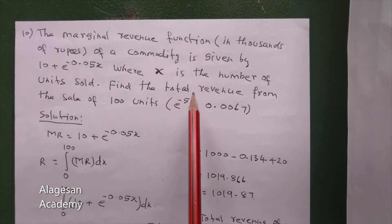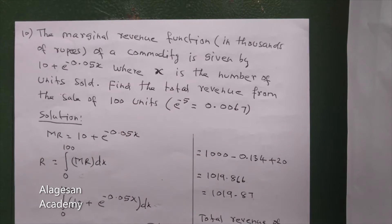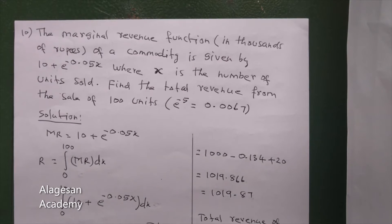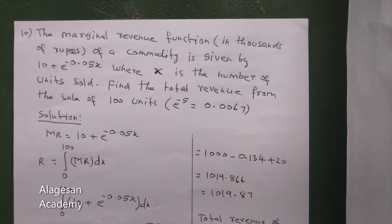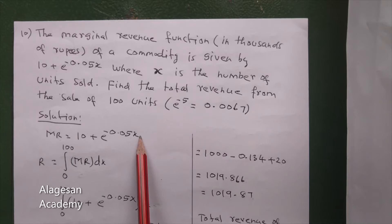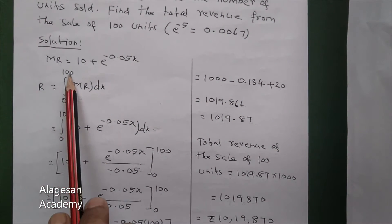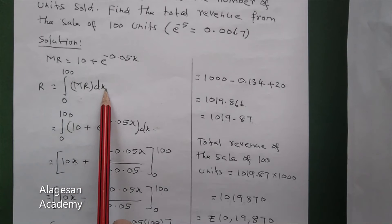So MR is 10 plus e power minus 0.05x. What is the formula for R? 0 to 100, MR dx. That's 0 to 100, what is MR? 10 plus e power minus 0.05x dx.